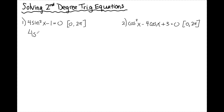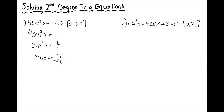If I add 1 over, isolating the variable, I get 4 sine squared x is equal to 1. Divide by 4, I get sine squared x equals 1 over 4. To get the squared out, I take the square root of both sides, so now I have sine x equals plus or minus the square root of 1 over 4. The square root of 1 over 4 is equal to a half. The reference angle I'm looking for here is pi over 6.